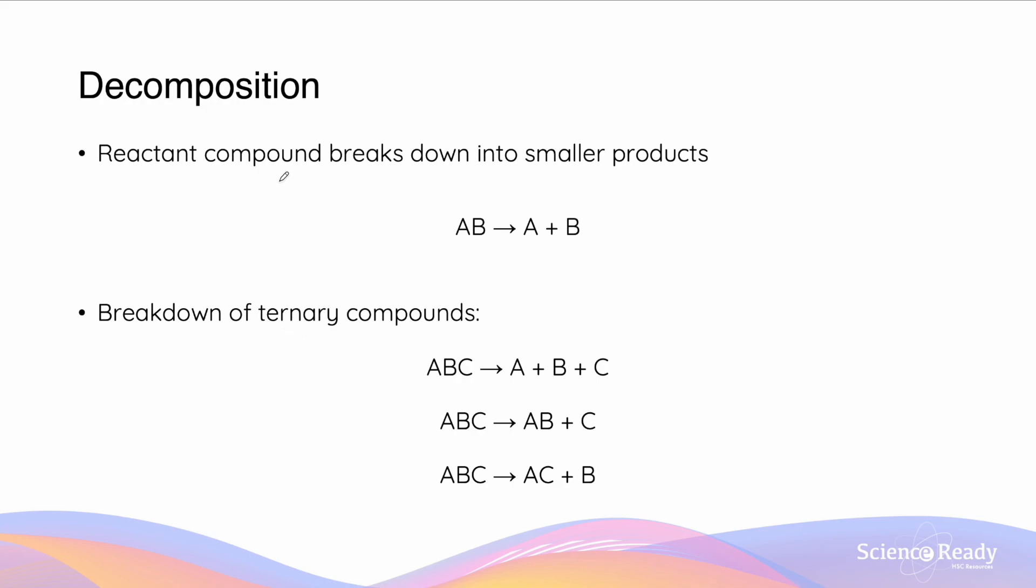So decomposition reaction is the opposite of a synthesis reaction, where synthesis refers to the formation of a new substance or new compound. Decomposition is where the reacting compound breaks down into smaller products. So we start off with AB, our binary compound, and that gets split up into A plus B. Similar to synthesis reaction, a decomposition reaction is not limited to a binary compound. It can also be the breakdown of a ternary compound. So ABC can turn into any combination of AB and C, AB plus C, or AC plus B.